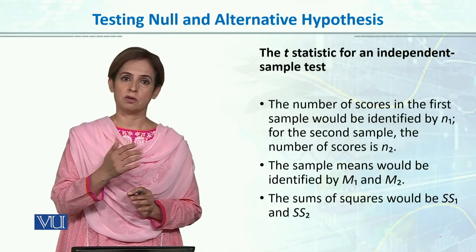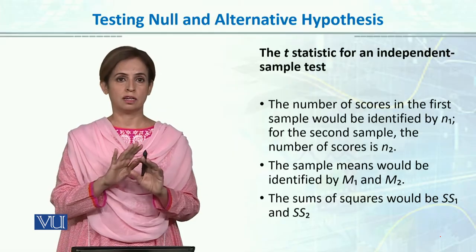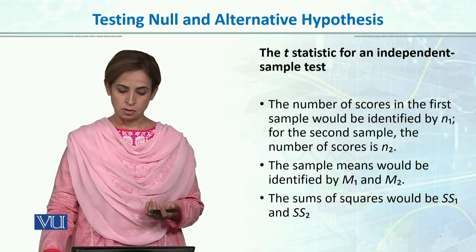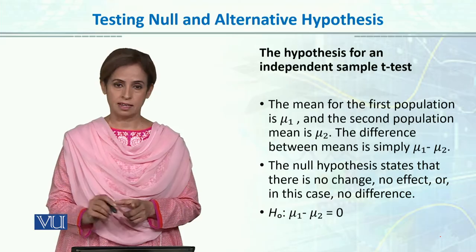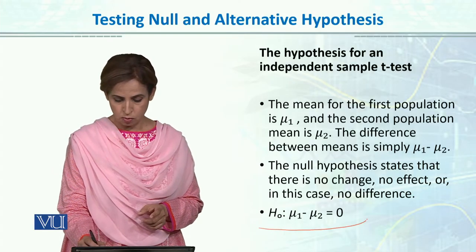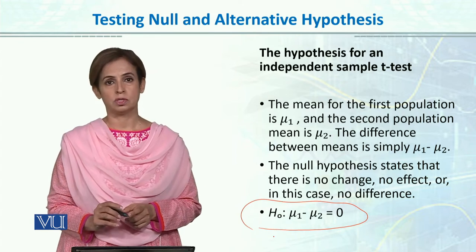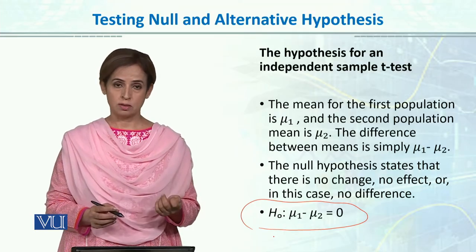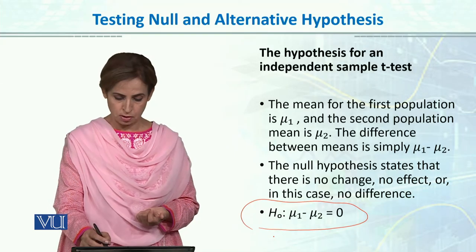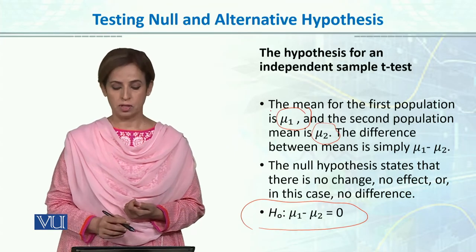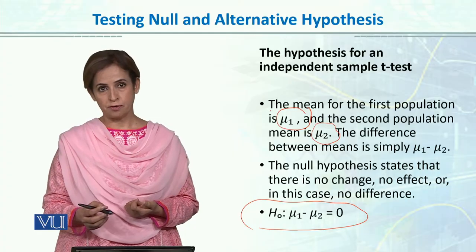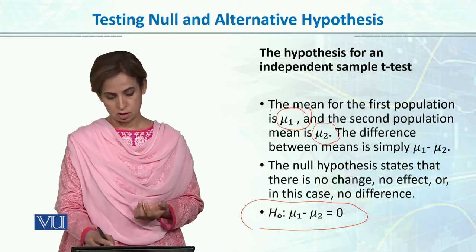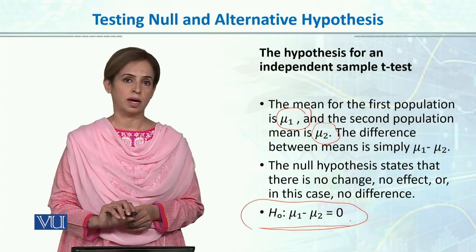We start with a very neutral statement: both are equal, there is no difference. For example, if we are measuring intelligence between boys and girls, both are equal. In the null hypothesis, we state that mu1 is equal to mu2, or mu1 minus mu2 is equal to zero — this is the hypothesis of no difference.